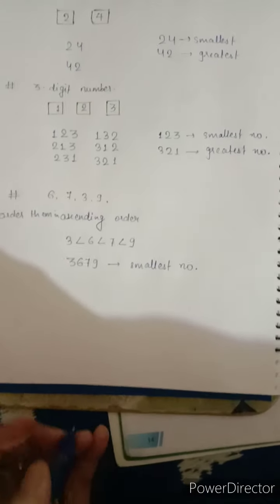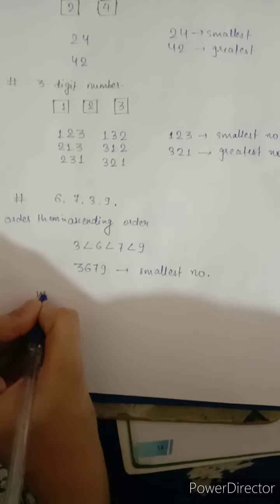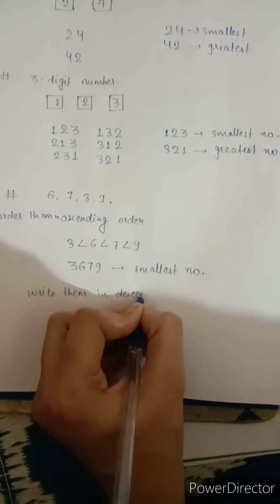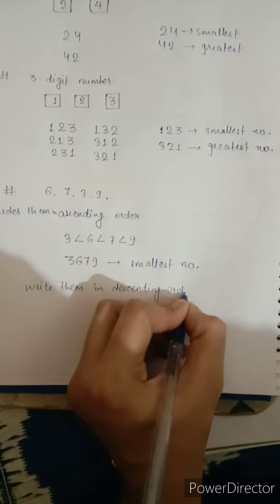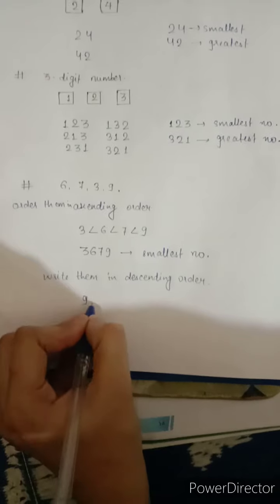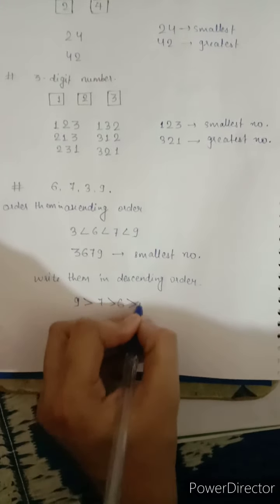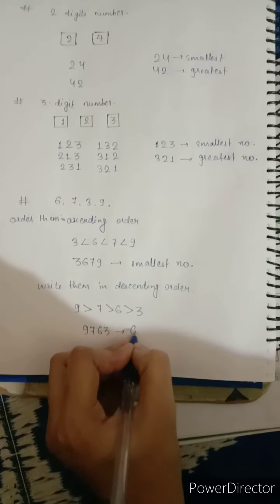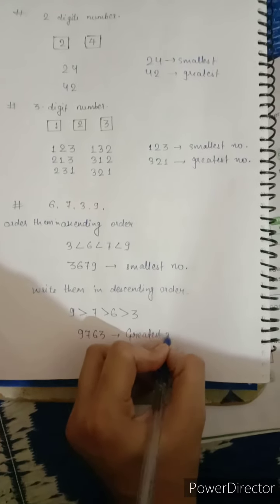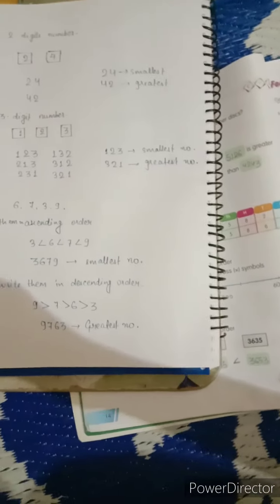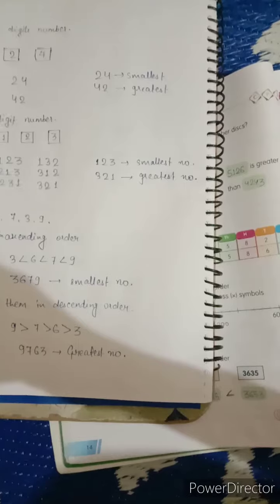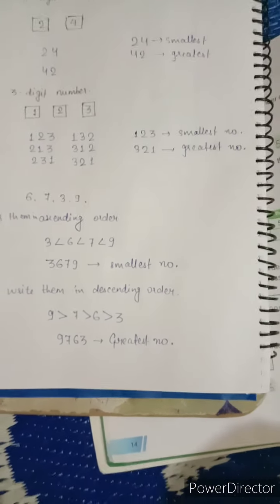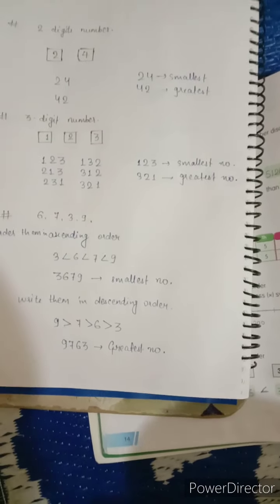For making the greatest number, we write the digits in descending order: first nine, then seven, then six, last three — so nine seven six three is the greatest number. To summarize: for making the smallest number we put the digits in ascending order, and for making the greatest number we put them in descending order. I hope you all understand these types of questions.